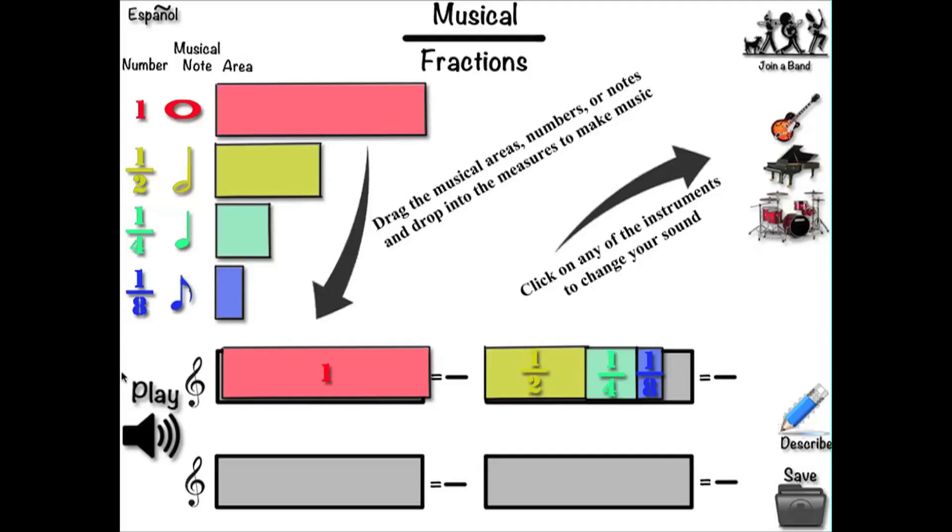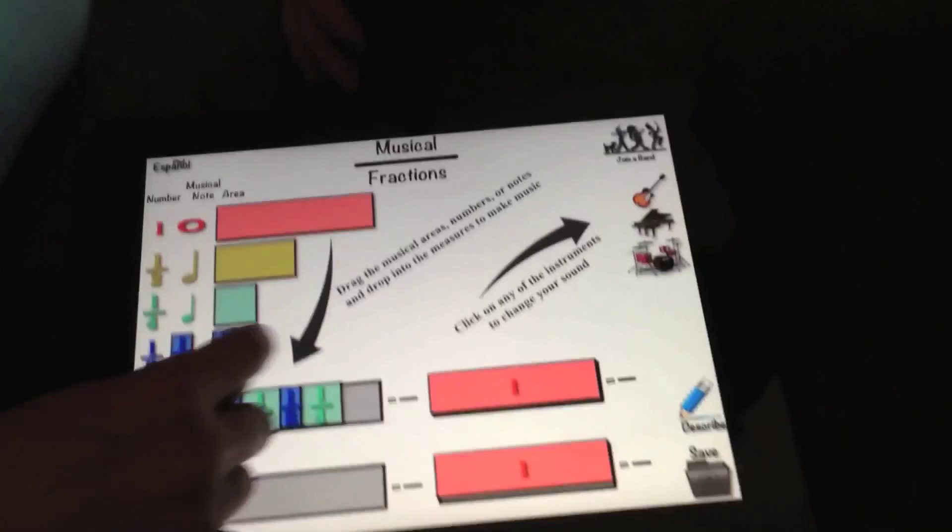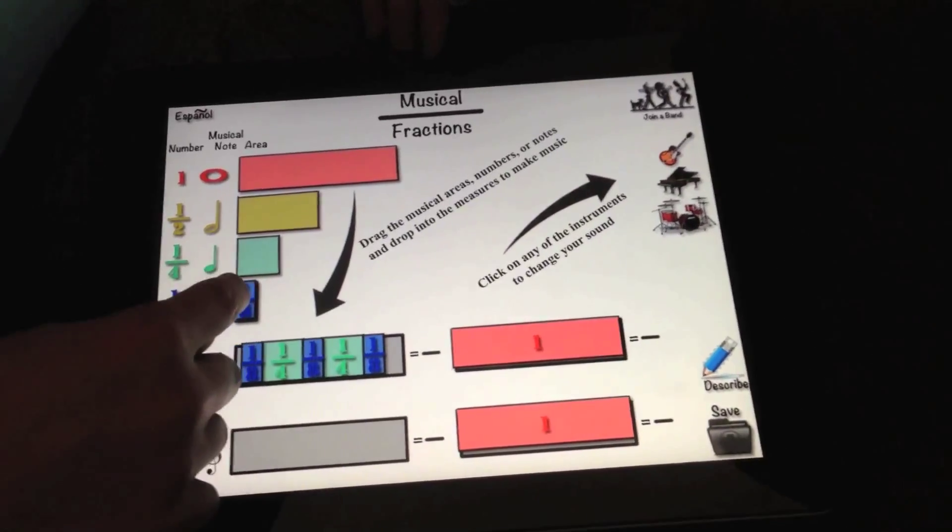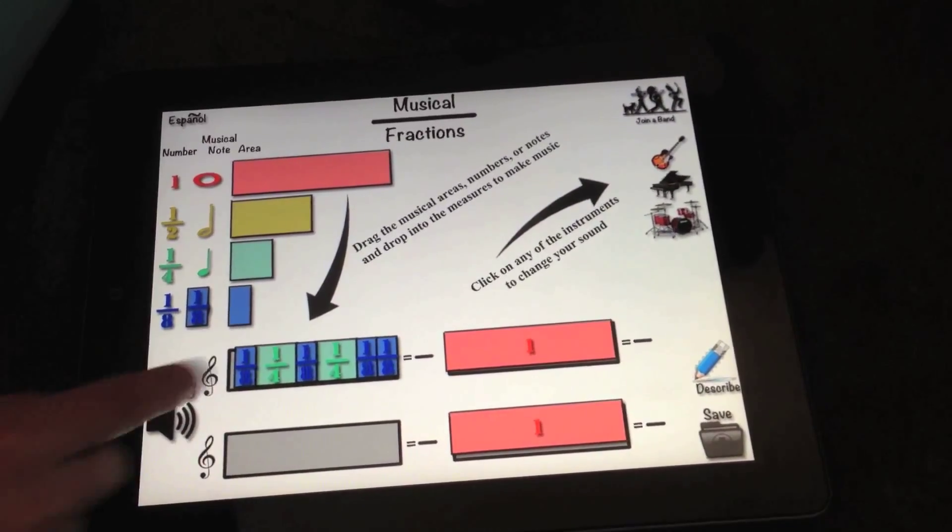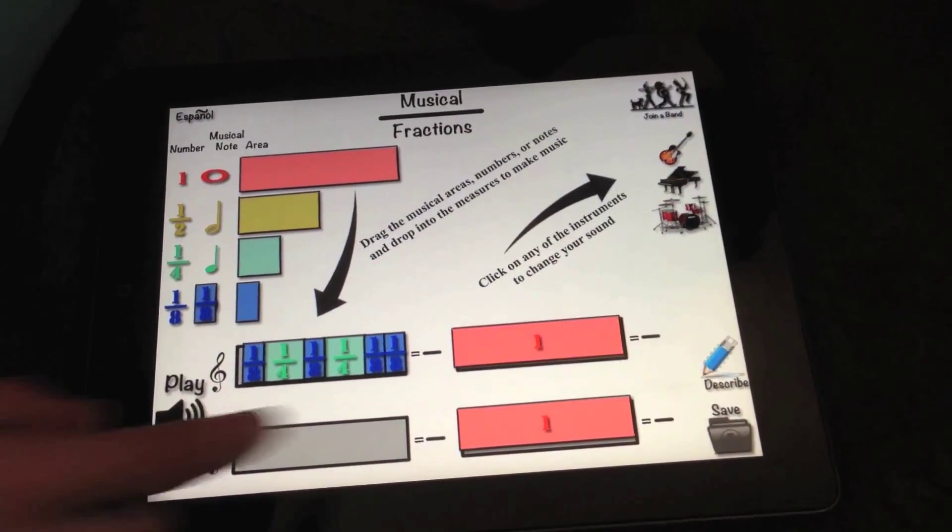Musical Fractions has multiple means of representation. As you can see here, fractions are represented in multiple ways: as a fraction, as a musical note, as area, and as length of the note. In addition, all three visual symbols of the same fraction are the same color and the same tone.